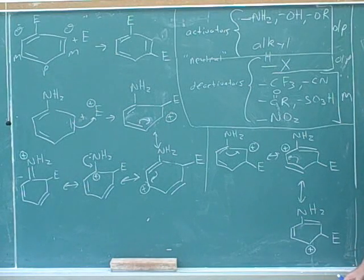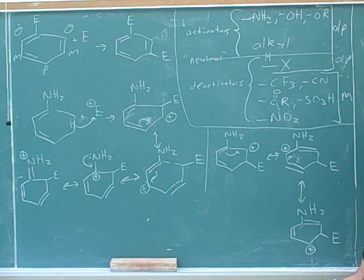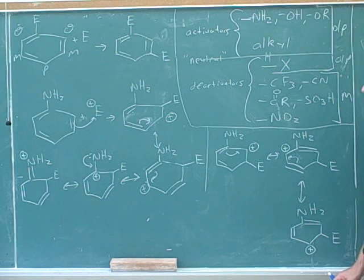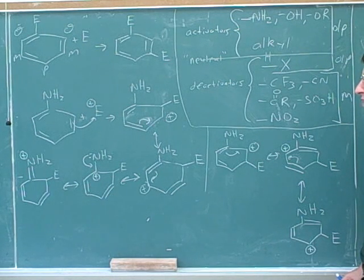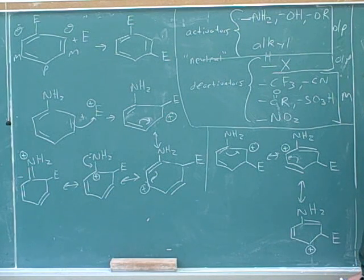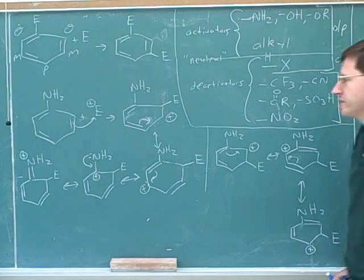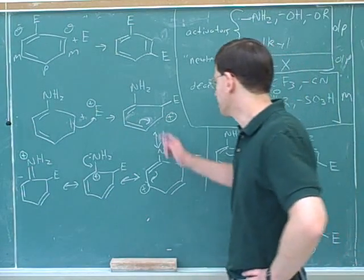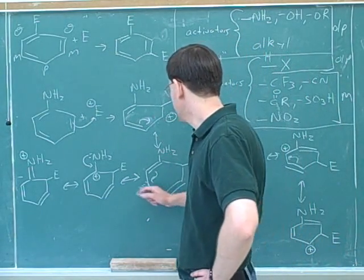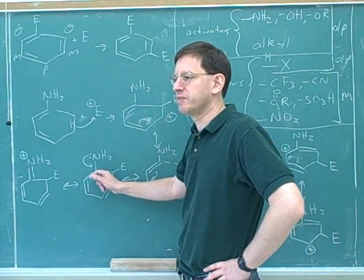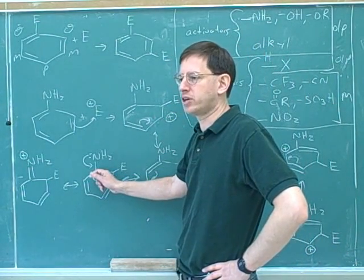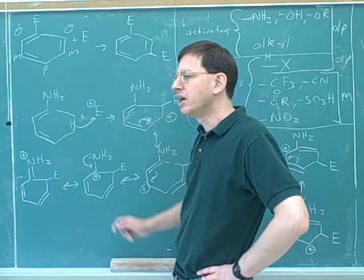One thing to notice here is how many carbons are there in benzene? Six. But how many different carbons can the positive charge be on after attack? Only three. If you actually draw the resonance structures, there's only one, two, three carbons that the positive charge can be on.